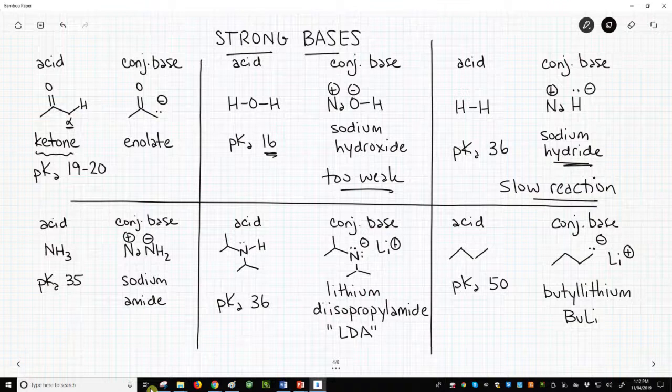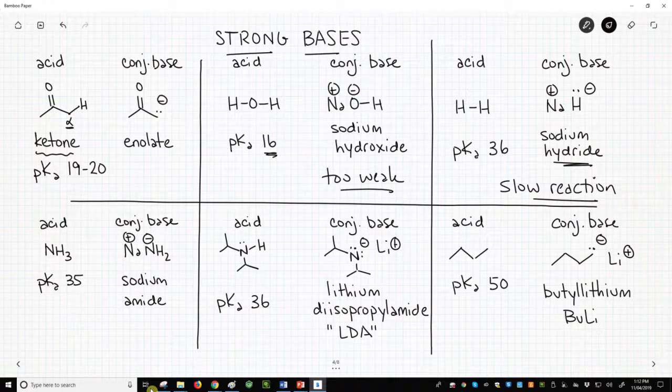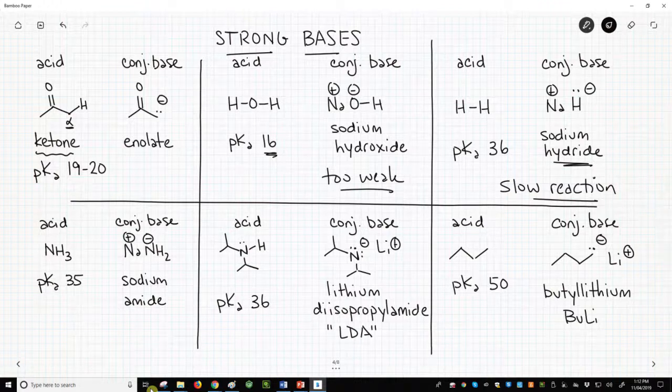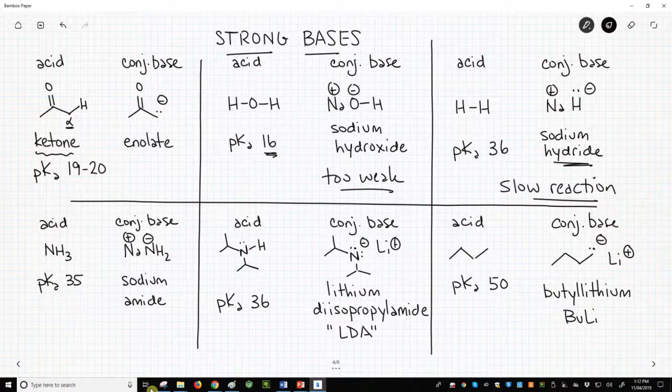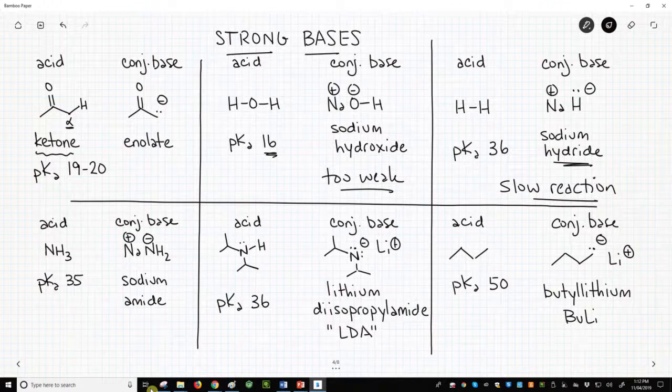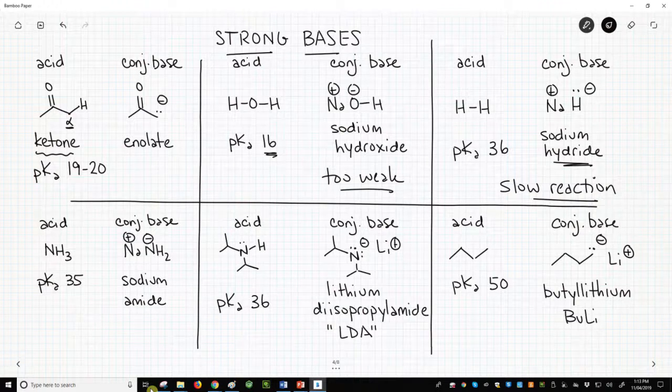On the bottom row to the left, we have ammonia and sodium amide. NaNH2 sodium amide is great for making acetylides. Since ammonia has a pKa of around 35 or so, sodium amide is plenty strong enough to make enolates. The problem is it is also nucleophilic and tends to attack the weakly electrophilic ketone. We need a base, not a nucleophile.